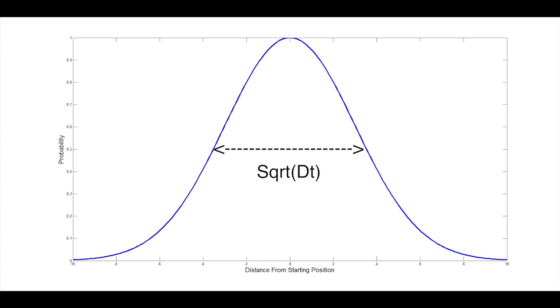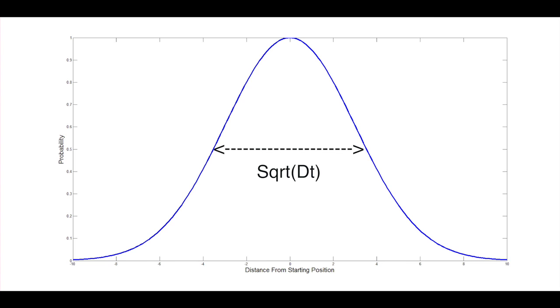This makes sense. The larger the diffusivity constant, the more the particle can travel in a set amount of time, and so the Gaussian should be larger to represent this.